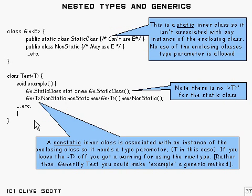Now if you leave that T off, you won't get an error, in fact you'll get a warning, warning you that you're using the raw type. So that's what happens if you leave that off. If you leave it off, effectively T is object, in this particular case.